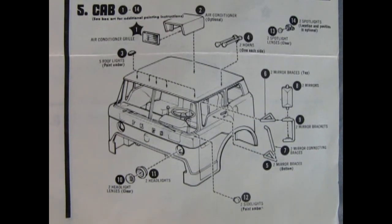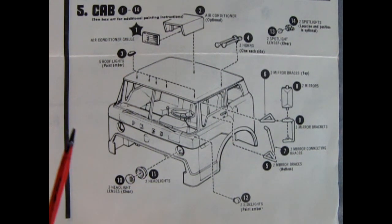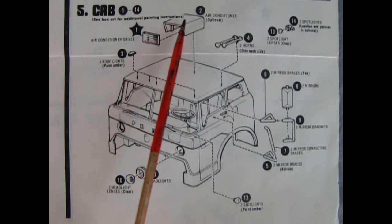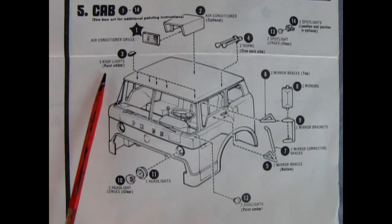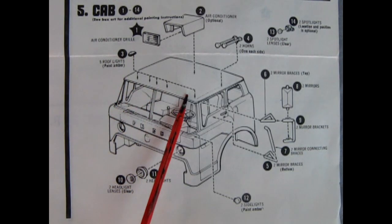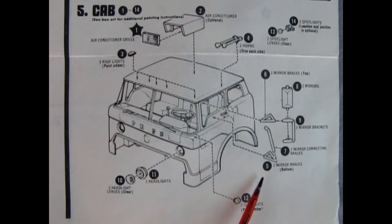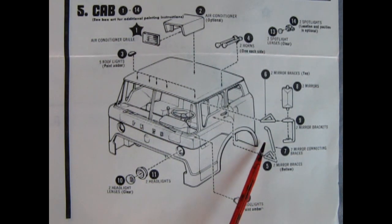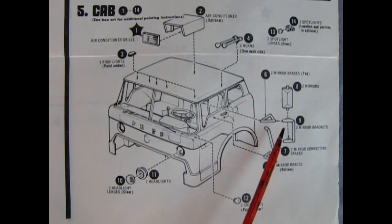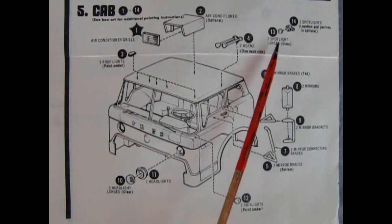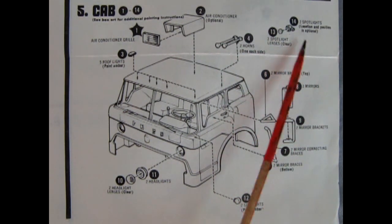Panel five shows our cab going together. And there are some optional parts here. So just keep that in mind as you're building this, that you can build the cab any way you like. So starting in step one, we have our air conditioner grill here going into the air conditioner unit. Now this is optional. Here we have the five roof lights for step three. And then number four is our two air horns, one on each side. And then number five, we have our two mirror braces left and right, of course. And then a connecting brace, the upper brace, the two mirrors, and the two mirror brackets. Then we've got our two headlights, the clear parts going into the headlight bezels, which go into these holes here. And then we've got our two side lights gluing in place, as well as the two spotlight lenses and the two spotlights, and it says location and position of the spotlights is optional.